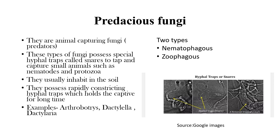Another type of fungi are predaceous fungi — animal-capturing fungi. They possess special hyphal traps called snares to trap and capture small animals such as nematodes and protozoa. They usually inhabit soil and possess rapidly constricting or non-constricting hyphal traps that hold the captive for a long time. Examples include Arthrobotrys, Dactylella, and Dactylaria. These are of two types: nematophagous fungi, which feed on or trap nematodes in the soil, and zoophagous fungi, which capture protozoans that are harmful to plant roots.